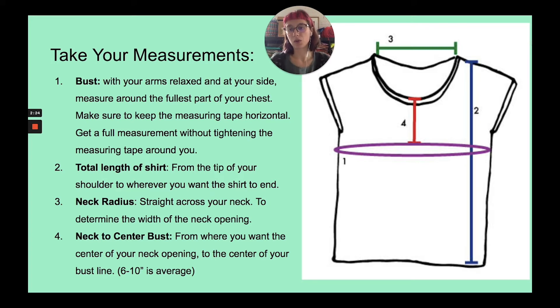Next we'll take the total length of the shirt, from the tip of your shoulder to wherever you want the shirt to end. That would be totally up to you. And then the third one is your neck radius. You want to measure straight across your neck, and that's to determine the width of your neck opening on the shirt.